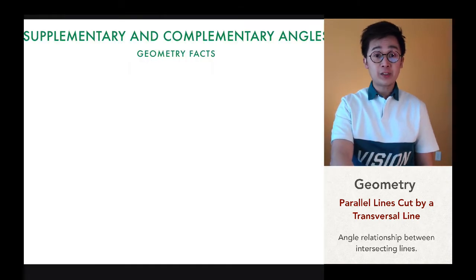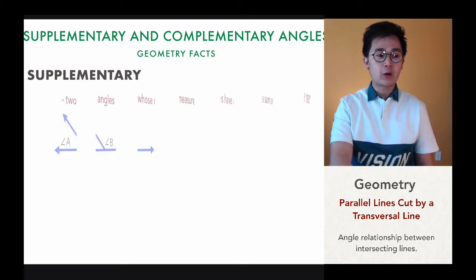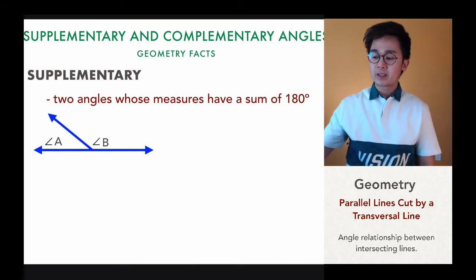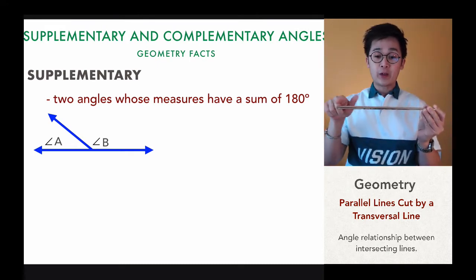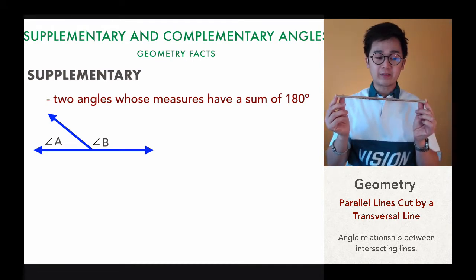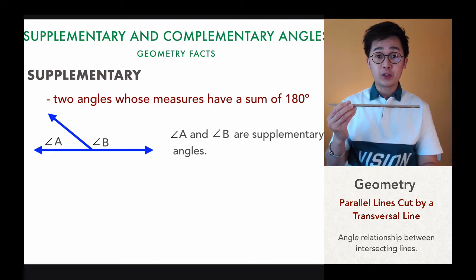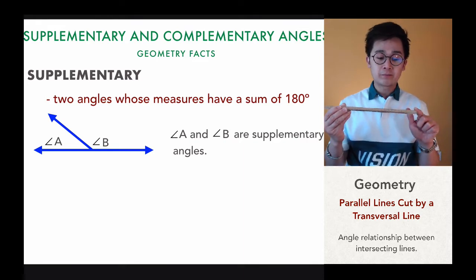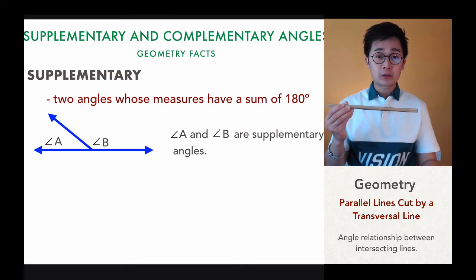The first facts we're going to be working on today are supplementary angles and complementary angles. Supplementary angles are an angle relationship in geometry wherein the sum of the angles equals 180 degrees. Think about a straight line — there will be multiple angles in this straight line, and when you add them all up their sum will equal 180 degrees. Remember: S for supplementary, S for straight line, equals 180 degrees.